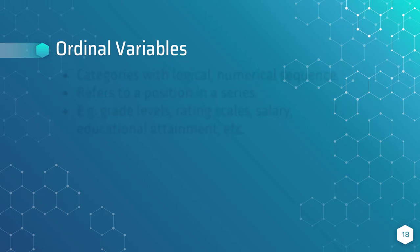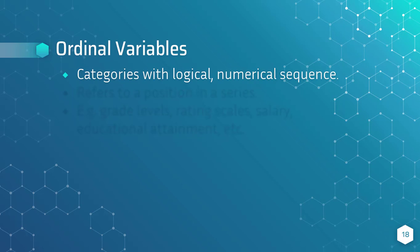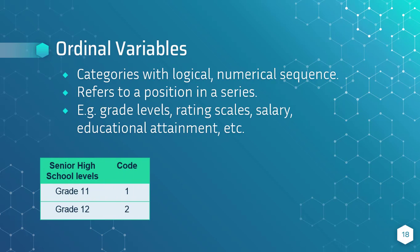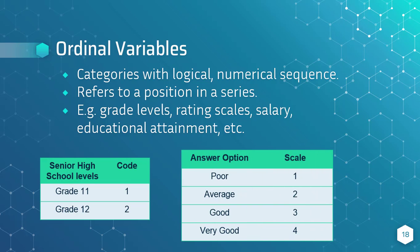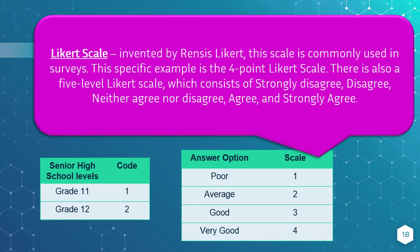Ordinal variables. Unlike categorical variables, these have a logical numerical sequence. By definition, ordinal refers to a position in a series. Variables which have numerically relevant categories are referred to as ordinal variables. For example, grade levels have a numerical sequence but are also categorized. Another example would be rating scales. The Likert scale, which is commonly seen in studies that utilize questionnaires, is an example of ordinal variables.